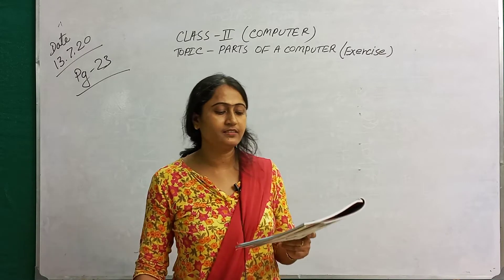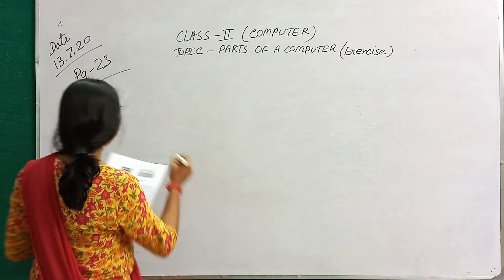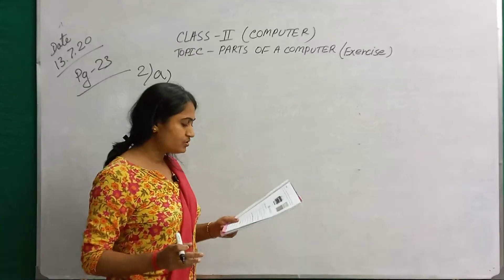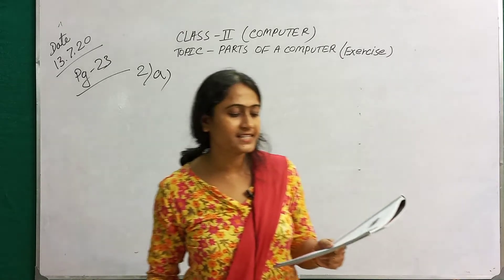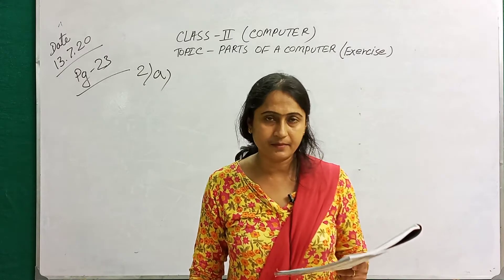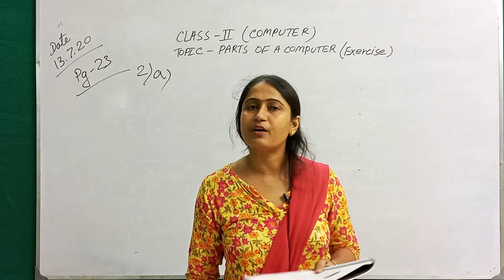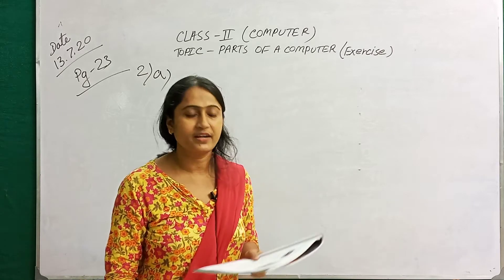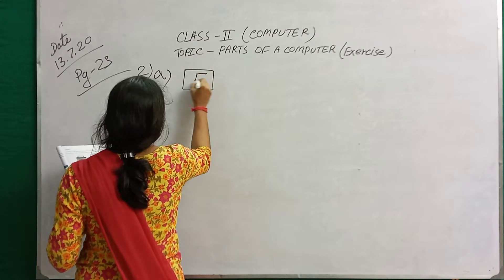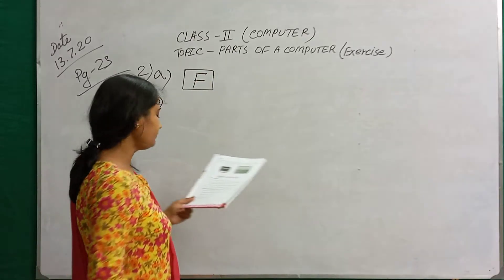Number 2: state whether the following statements are true or false. Number A: a mouse is used to type text and numbers. We use a mouse to type text and numbers? No, it is false. We use the keyboard to type text and numbers. So number A is false.